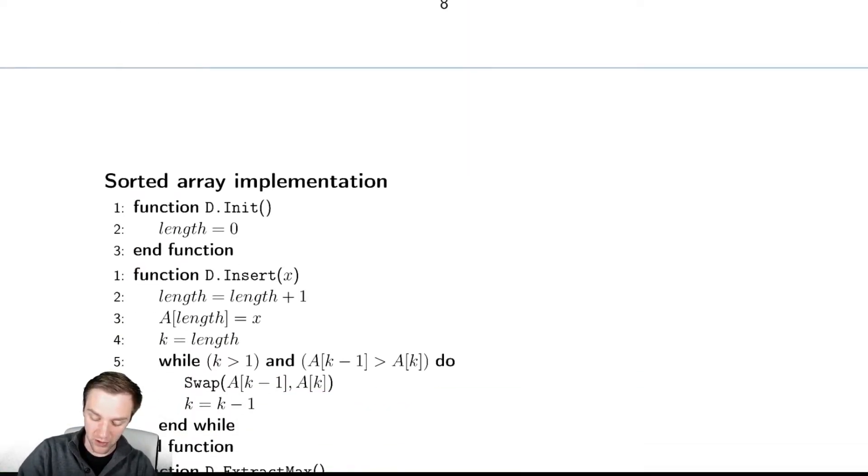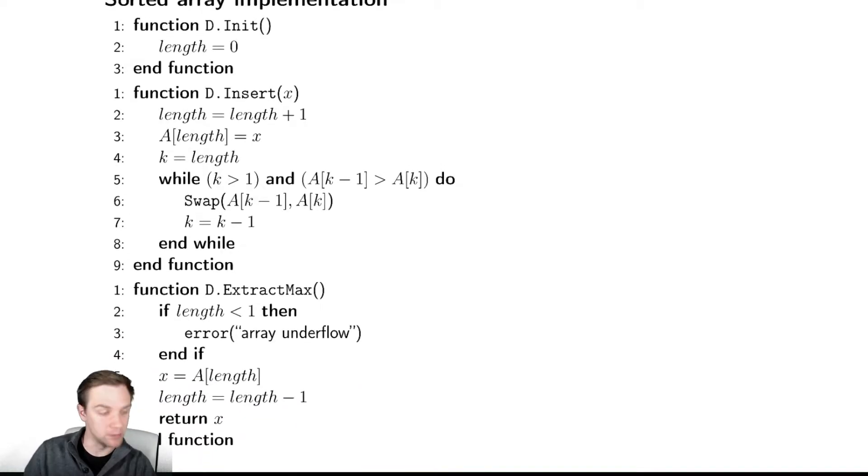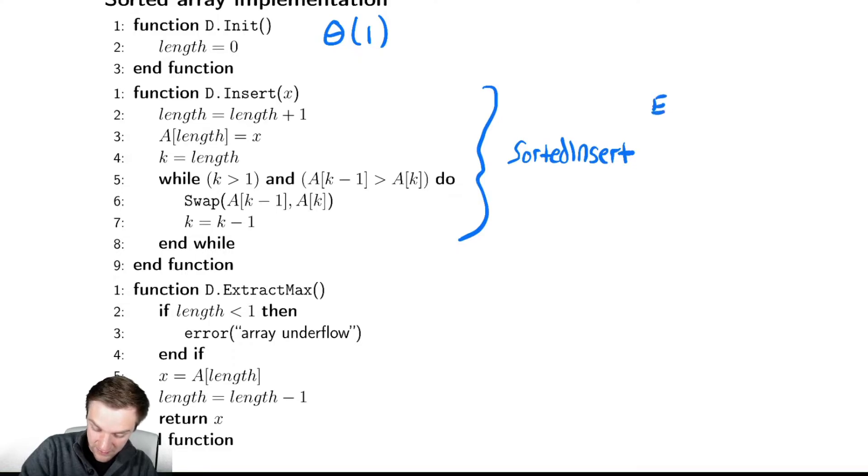Let's compare another implementation. Our second implementation is a sorted array. The constructor takes constant time. To insert an element into a sorted array, we can copy-paste all the code from sorted insert that we analyzed in the probabilistic analysis unit. This was in expected case and worst case theta of the number of elements, but a best case of theta of 1. The best case occurred when the element we were inserting was larger than every element already in the array.